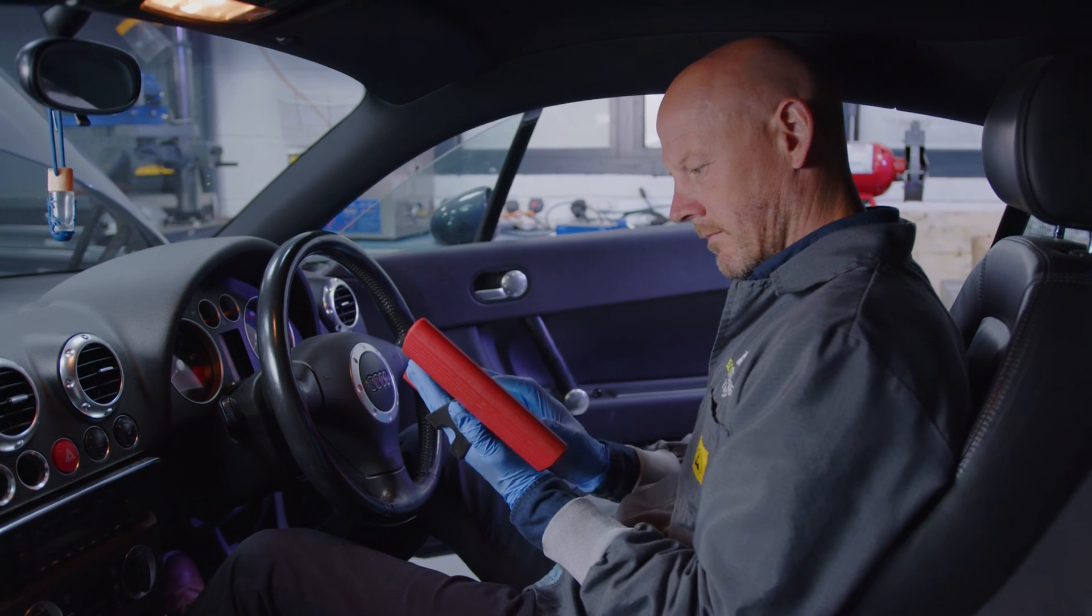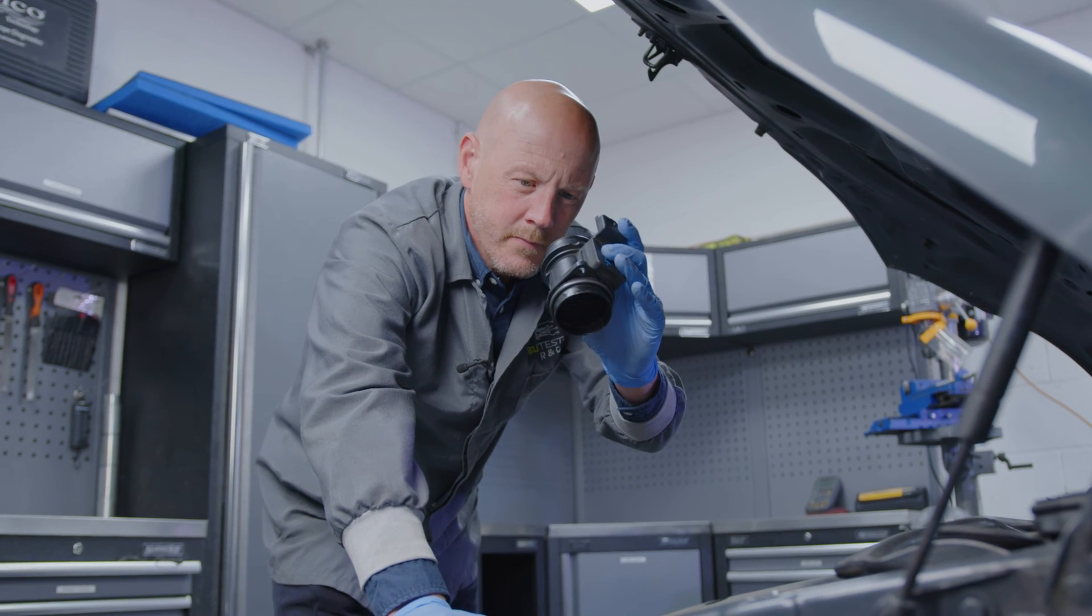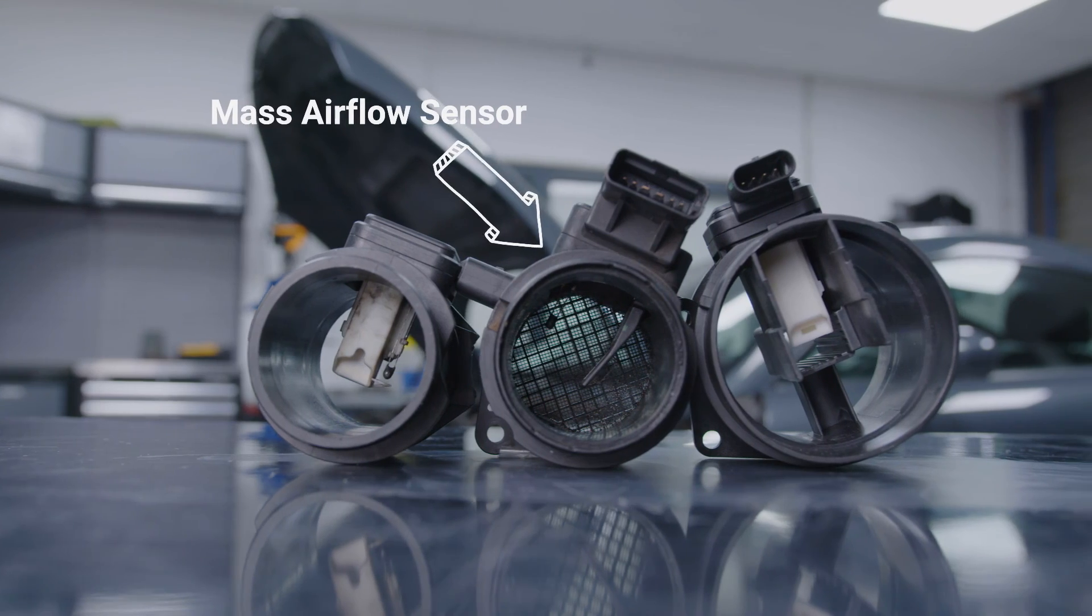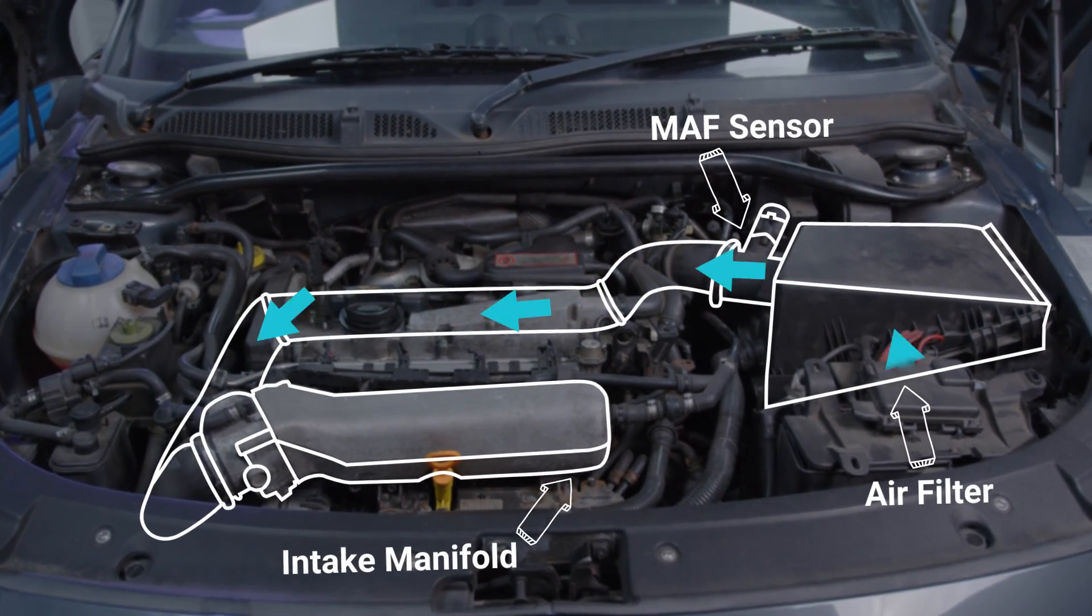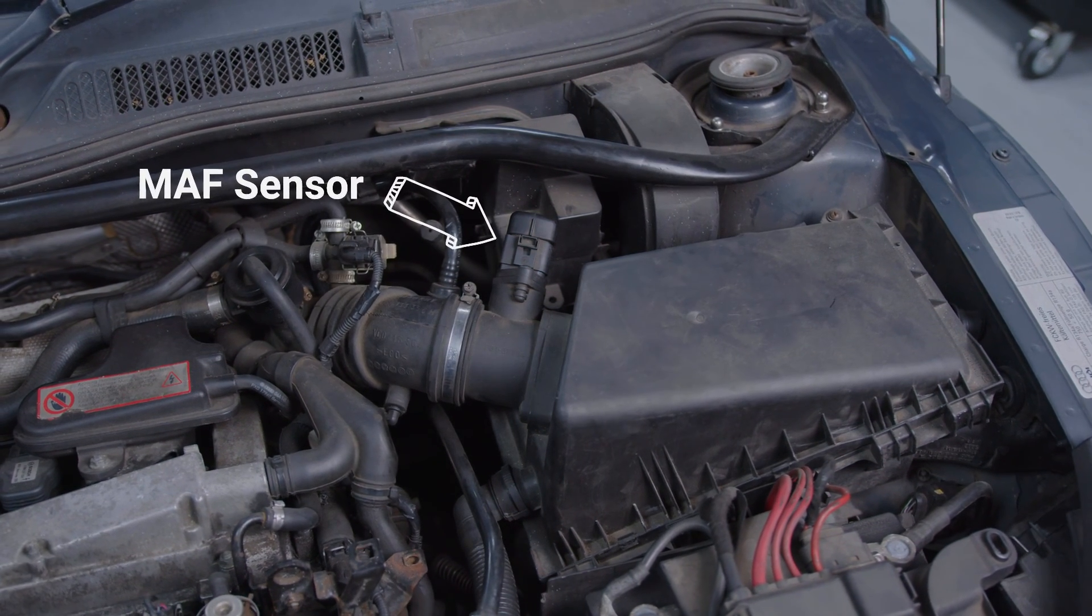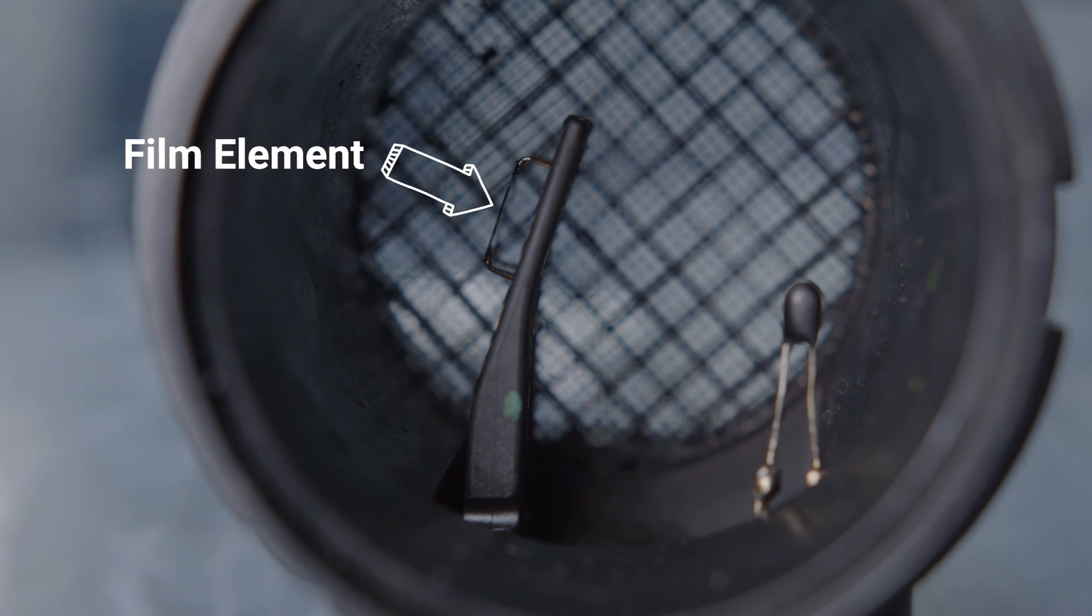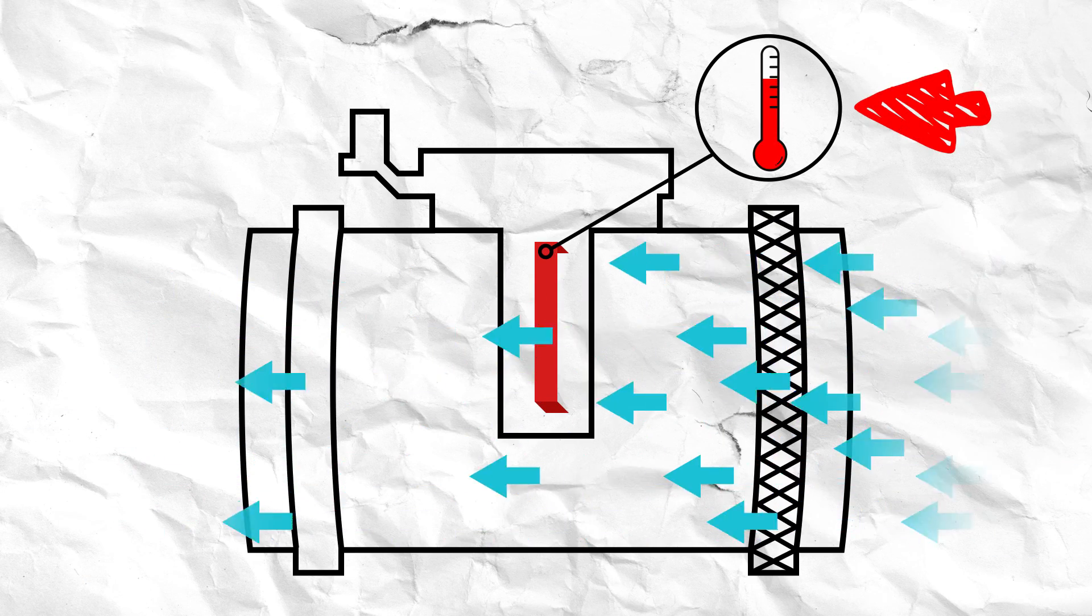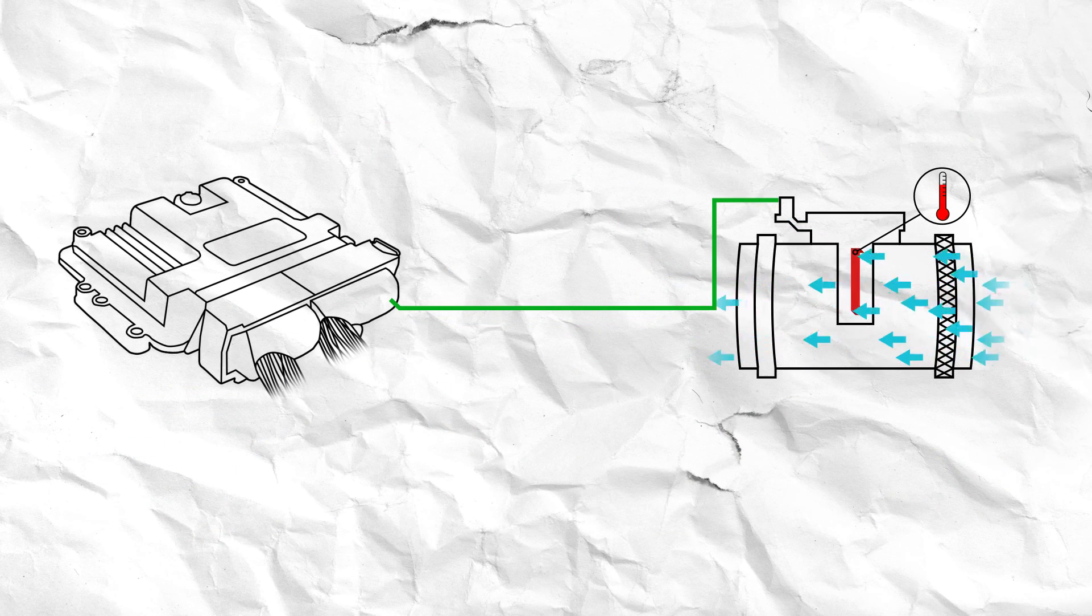To understand why these faults occur we need to look at how the sensor functions. As its name implies, the mass airflow sensor is responsible for measuring the amount or mass of air that flows into the engine's intake manifold to be used in the combustion cycle. It is located in between the air filter and intake manifold and contains a protruding heated wire or film element which is cooled as air flows past it. The sensor monitors the change in this element's temperature and converts it into an electrical signal which is then passed to the ECU.